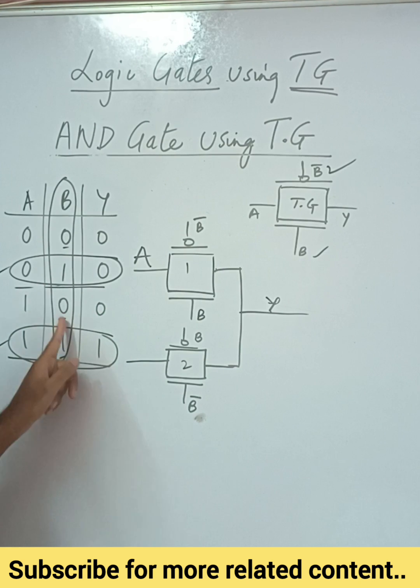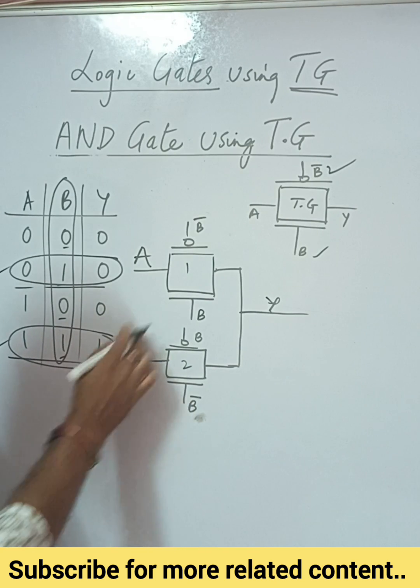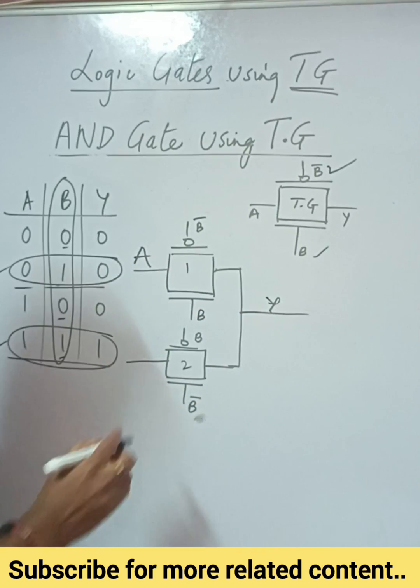So when b is zero, this transmission gate will get activated and your input will directly go to zero. So whatever be the input, basically we are converting this to ground, we are connecting it to ground.